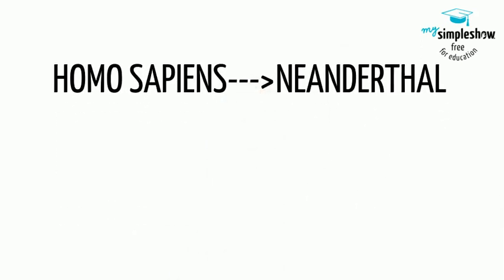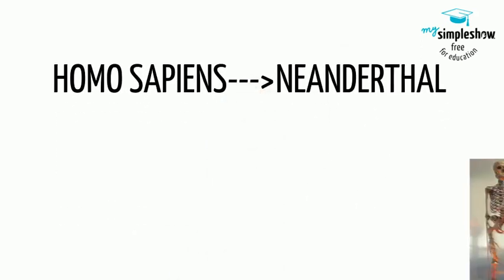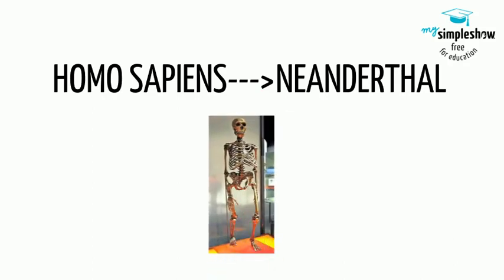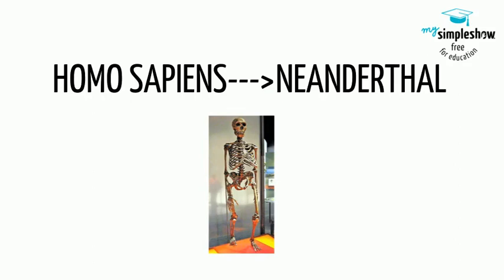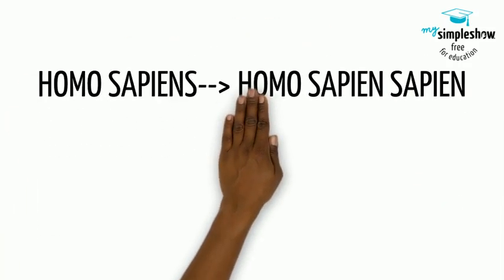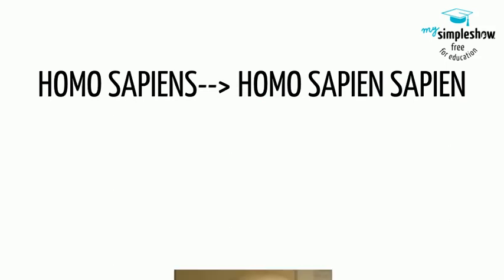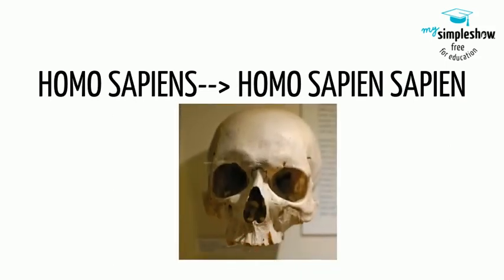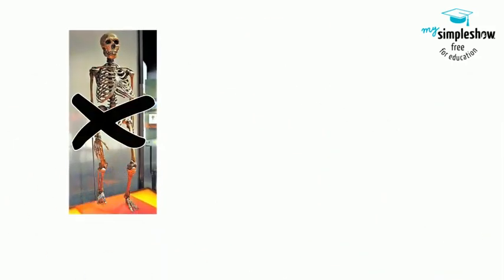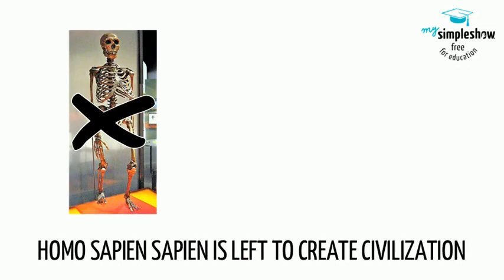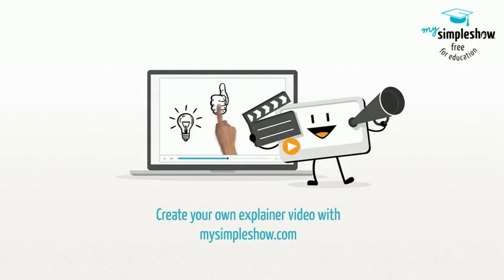It is believed that Homo sapiens developed into two different hominid groups: Neanderthals, with their large bones and smaller brain cavities, with questions about whether they had the ability to speak; and Homo sapiens sapiens, with speech ability, adaptive technology, and adaptive survival skills. 30,000 years ago, Neanderthals vanished, leaving Homo sapiens sapiens to create civilization.